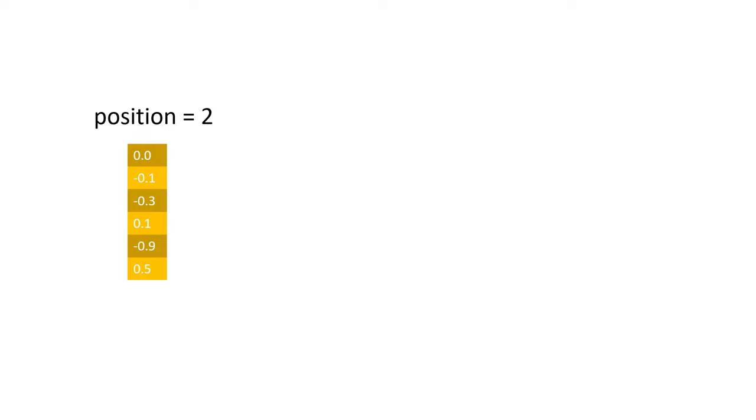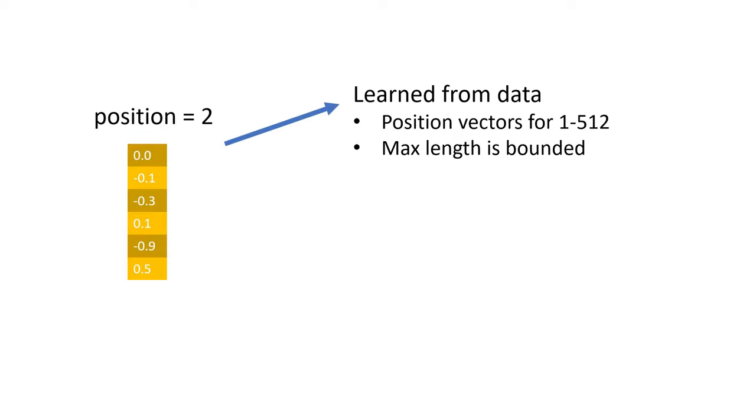The first method is to simply learn them from data, just like the rest of the parameters of the model. So we would learn one Positional vector for position 1, for position 2, and so on, up to the max length that you want to represent. And this is a problem because the max length that you can represent is bounded. If you only learned Positional vectors up to position, say, 512, then there is no way to represent a sequence of longer than 512 tokens.